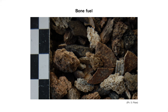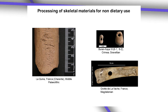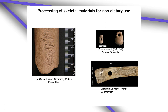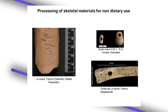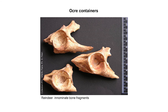Bones and teeth have also been used to make or contribute to fires — called bone fuel, known for quite some time in the Paleolithic. Bone marks are also found in relation to the use of skeletal materials for non-dietary, technical use: as blanks for artifacts, tools, ornaments, mobile art in the upper Paleolithic, and as containers made from reindeer pelvis bones.